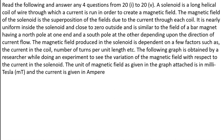The question says: read the following and answer any four out of five — there is internal choice here. A solenoid is given — a long helical coil of wire through which a current is run to create magnetic field. The magnetic field of the solenoid is the superposition of the fields due to current through each coil. It is nearly uniform inside the coil and close to zero outside. The magnetic field produced in the solenoid depends on current and a few other factors.